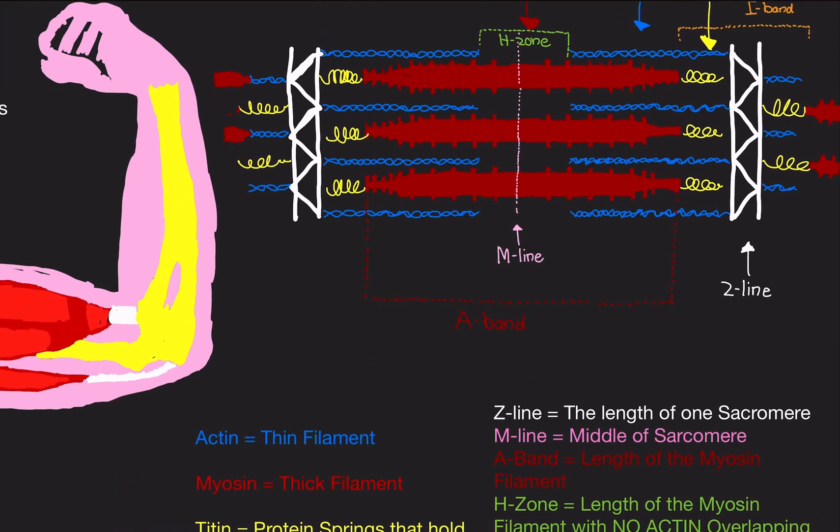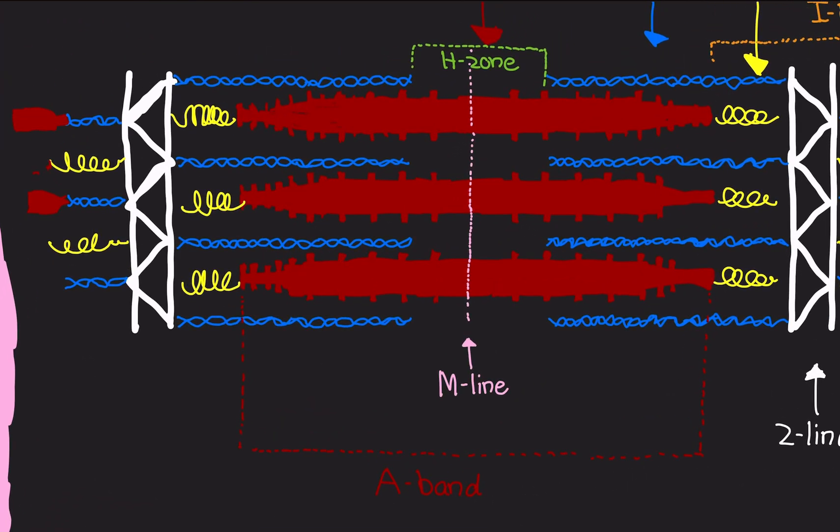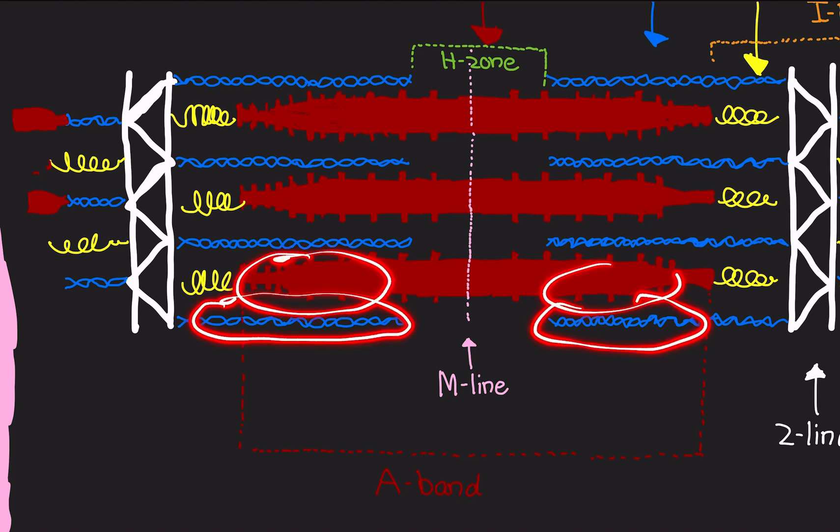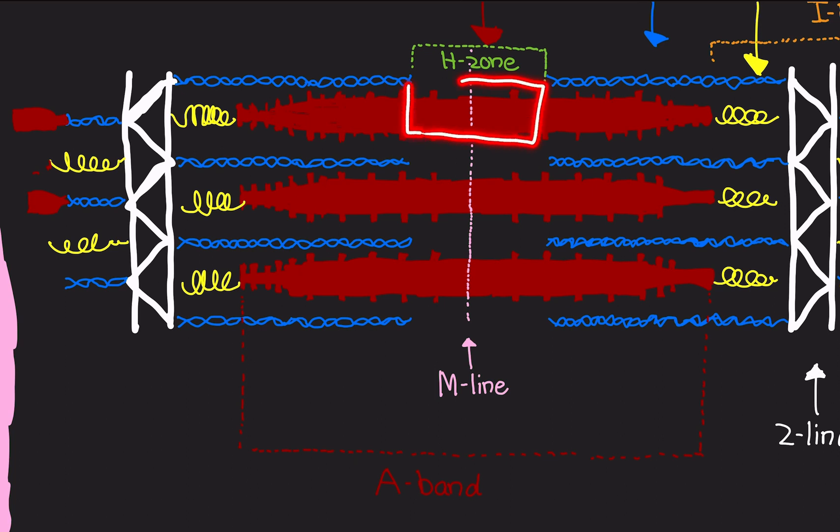The H-zone is where it gets a little bit complicated. The H-zone is just like the A-band, except there's one difference. It is the length of the myosin, but it's only the length of the myosin where there's no actin overlapping. So notice that the A-band, we have actin over here. It's overlapping with the myosin filament. With H-zone, it's this section right here where it's only myosin and no actin. There's a space between the middle of the myosin filament where there's no actin.